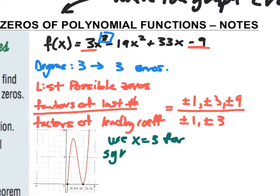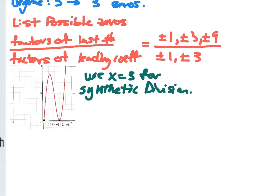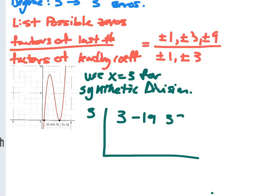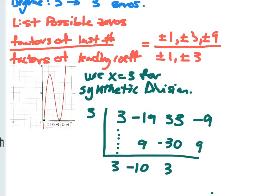I'm going to use 3 for synthetic division. I list out my coefficients from the polynomial: 3, -19, 33, and -9. Dropping the 3 down: 3 × 3 = 9; -19 + 9 = -10; 3 × -10 = -30; 33 - 30 = 3; 3 × 3 = 9; and we're left with a remainder of zero.